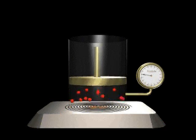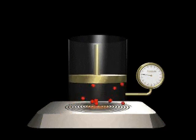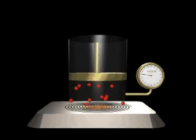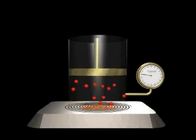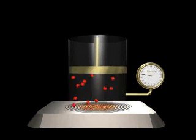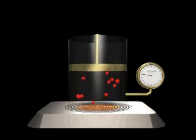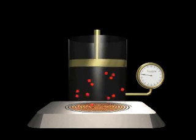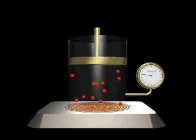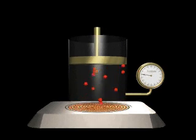An increase in the temperature of a gas sample at constant pressure results in an increase in volume of the gas. The gas particles move faster at higher temperature, so they exert more force on the walls of the container.